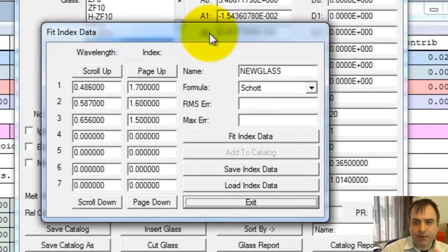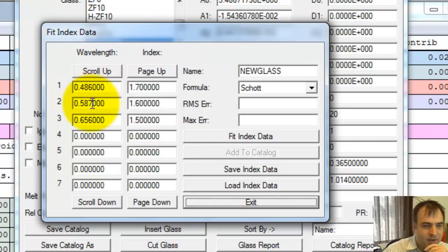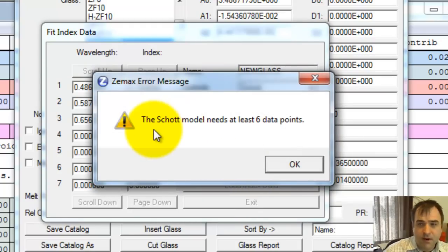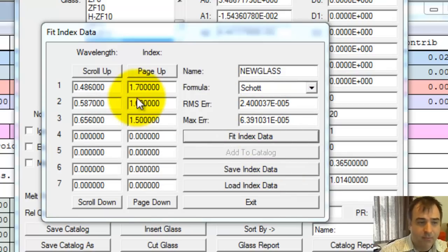Now before I load in all those index data, I think there's 20 data points here. I want to try something interesting. Let's suppose that we've got three wavelengths. We've got 486, 587, 656. We're going to choose this Schott formulation and fit the index data. It gives me an error message: Schott model needs at least six data points. That makes sense because the formulation has six unknowns. If you want to solve for six unknowns, you need at least six knowns. The more knowns you have, the higher the fidelity of your model. You can't just do simply three data points.